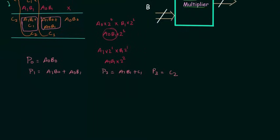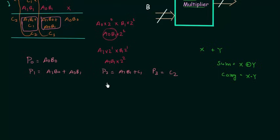To implement this circuit, recall from the half-adder: when you add two numbers X and Y, the sum equals X XOR Y and the carry equals X AND Y. We need to use half-adders here. For P1, the result is A1·B0 + A0·B1, so we need one half-adder. For P2, we also need one half-adder.